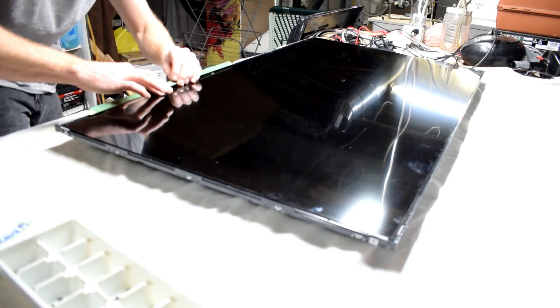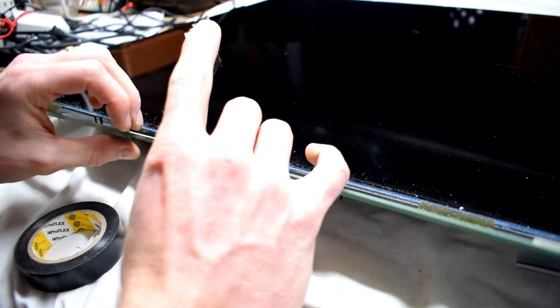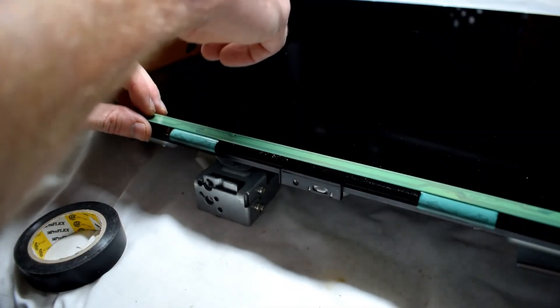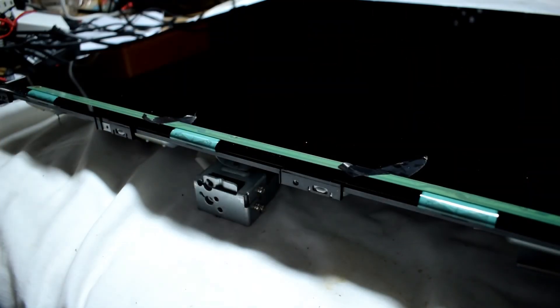Now, gently lift the ribbon cables up and tape them to the front of the TV, because they'll come with the screen as we remove the screen.